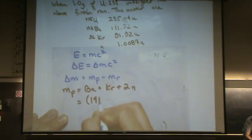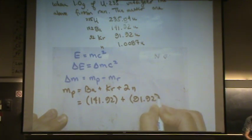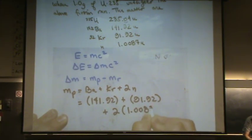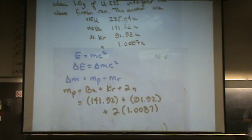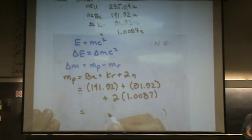Barium at 141.92, I've got krypton at 91.92, and I've got two neutrons at 1.0087. You want to keep all these sig figs in the beginning and do your rounding at the end, because there are a lot of sig figs here. So that turned out to be for the products 235.86.